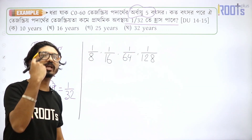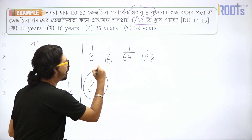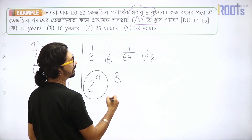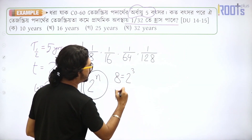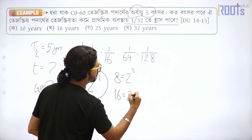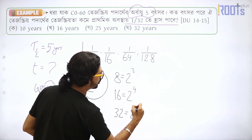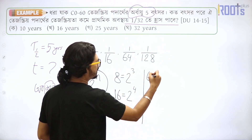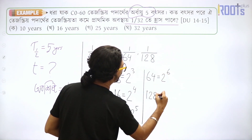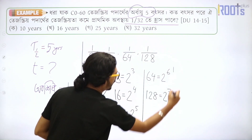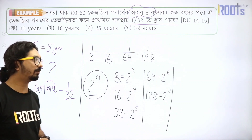Each of these numbers can be expressed as a power of 2: 2 to the power n. For example, 8 equals 2³, 16 equals 2⁴, and 32 equals 2⁵. Similarly, 64 equals 2⁶.